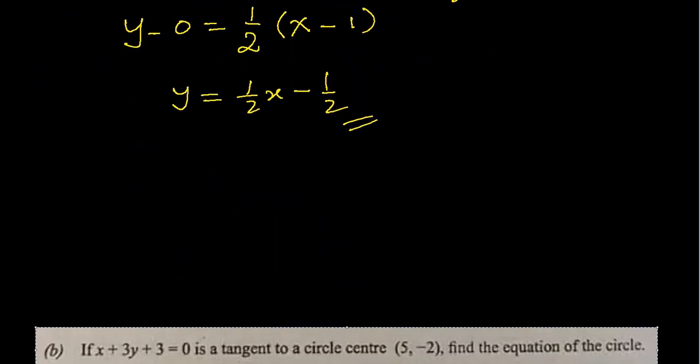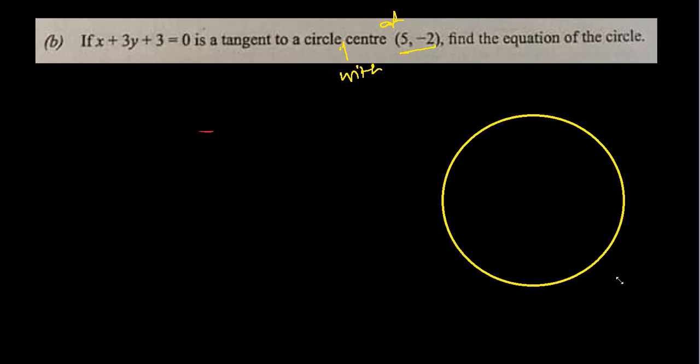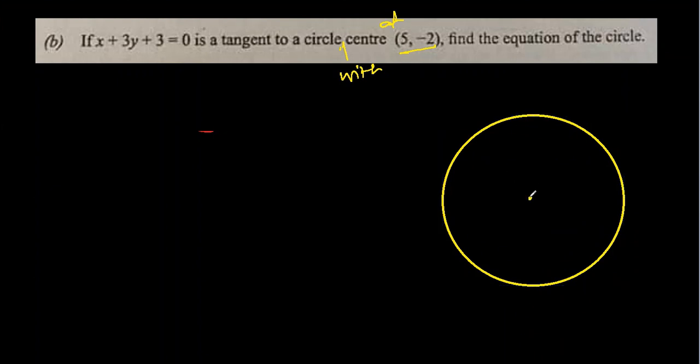Let's move on to part B. If x plus 3y plus 3 is a tangent to a circle with center 5, minus 2, find the equation of the circle. Let's visualize this by drawing a circle. The center is at 5, minus 2, and the tangent is somewhere on the circle — they have not specified where.